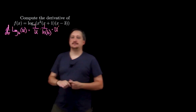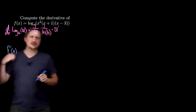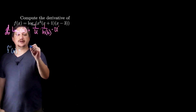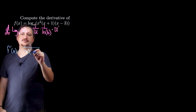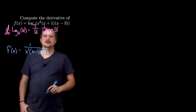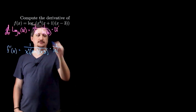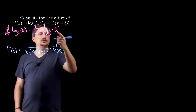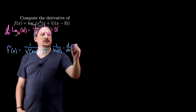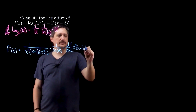This is obviously going to apply to our function. When I want to compute f prime of x, I could just jump right in. It's a log base e of a bunch of stuff. So according to my formula, I'm going to have 1 over that stuff — x squared times x plus 1 times x minus 3 — times 1 over the natural log of the base, which is e, times u prime, meaning the derivative with respect to x of x squared times x plus 1 times x minus 3.